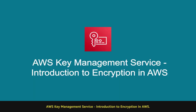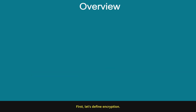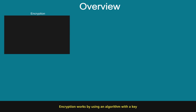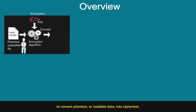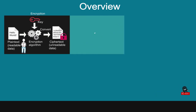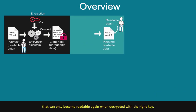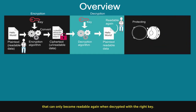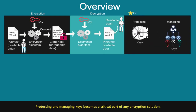Introduction to encryption in AWS. Encryption works by using an algorithm with a key to convert plaintext readable data into ciphertext. Ciphertext is unreadable data that can only become readable again when decrypted with the right key. Protecting and managing keys becomes a critical part of any encryption solution.